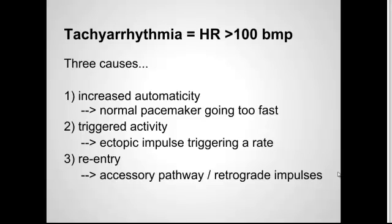A tachyarrhythmia is going to be a heart rate of greater than 100. There are a couple different causes of this. One is an increased automaticity, so you're going to have a normal pacemaker that's going too fast. Another reason would be triggered activity, so this is an ectopic pulse that's triggering a different rate. And then there's the re-entry category, which can either be accessory pathways or retrograde impulses.